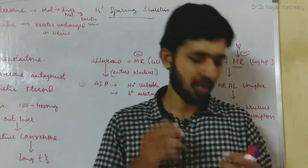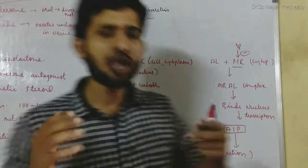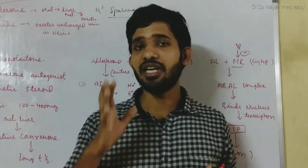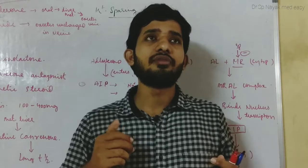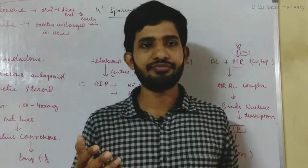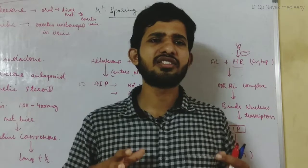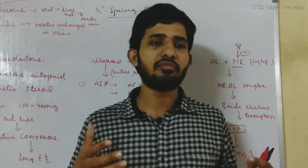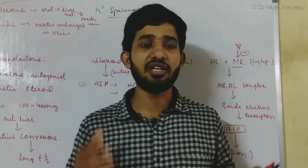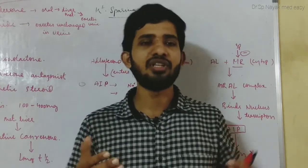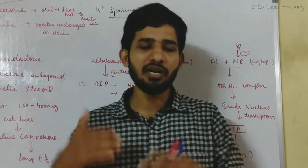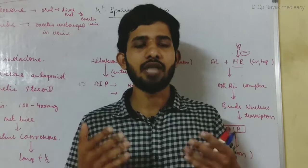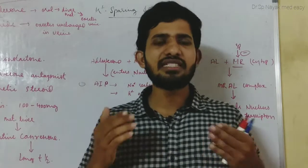While talking about diuretics, remember we have many types of diuretics. Diuretics are mainly indicated in edema conditions and in hypertension. Edema usually occurs in chronic kidney failure, liver failure, anaphylaxis conditions, and during severe inflammations. In these conditions, to remove the excess fluid accumulated in the body, we generally give diuretics.